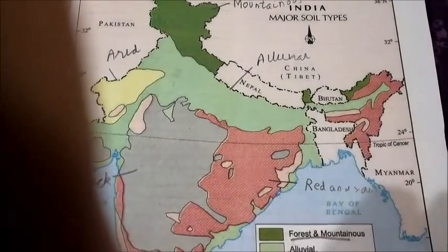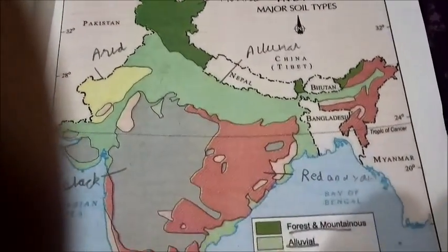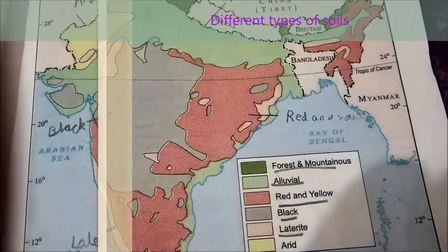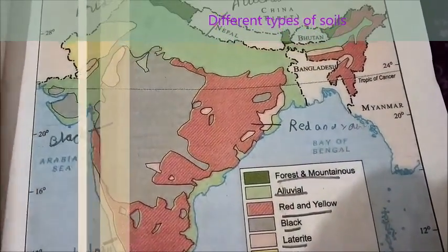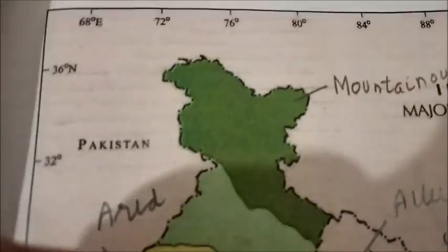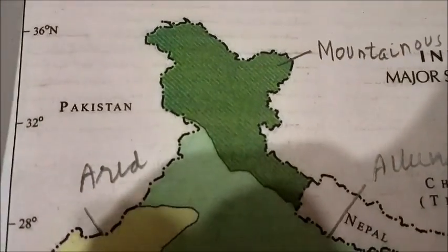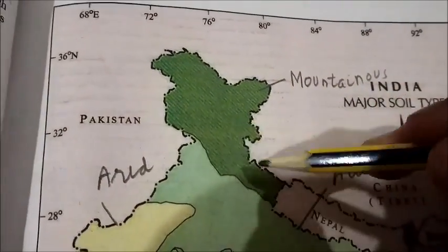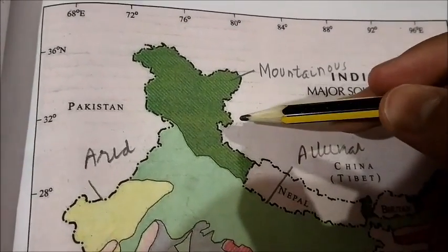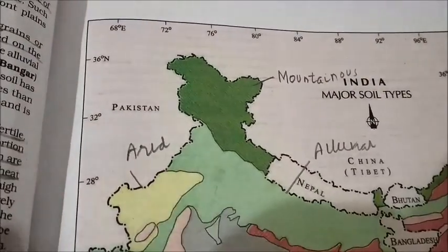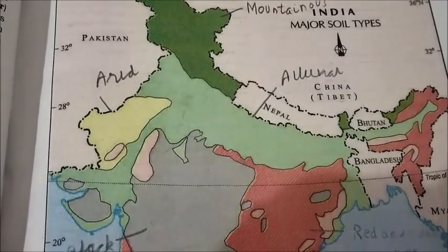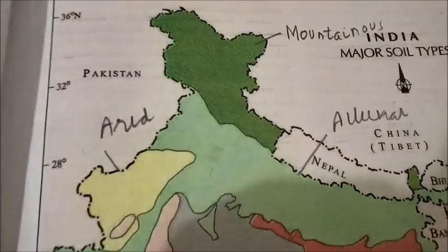Now let's come to geography. As you know, there are six types of soil you need to remember and where they are located in India. Starting with forests and mountainous soil — this is primarily in northern India, in the states of Jammu and Kashmir and also parts of Himachal Pradesh and Uttarakhand. It's pretty natural and obvious because that is where you find a lot of mountains.